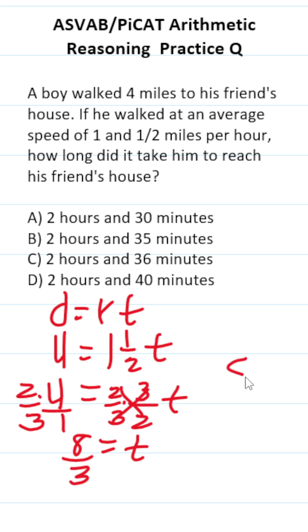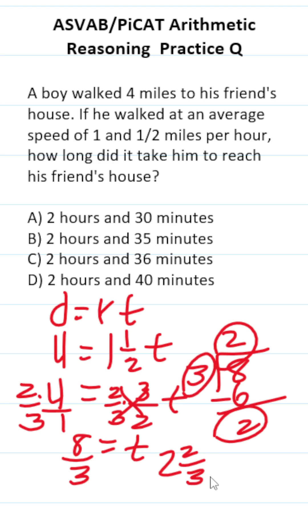So let's convert this back to a mixed number. This is 2, 6, 2. This 2 is going to be our whole number. This 2 is going to be our numerator. This 3 is going to be our denominator. So it took him 2 and 2 thirds hours.